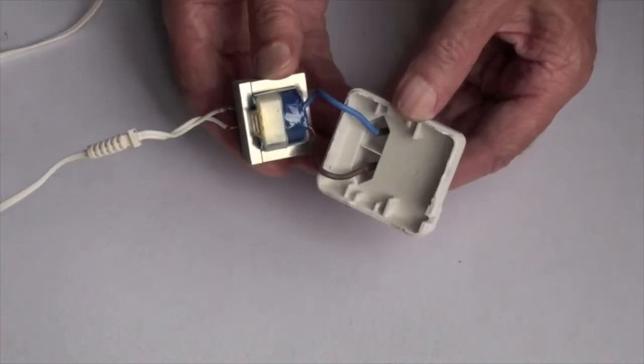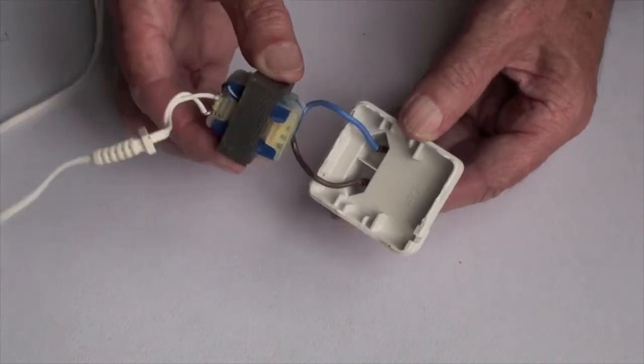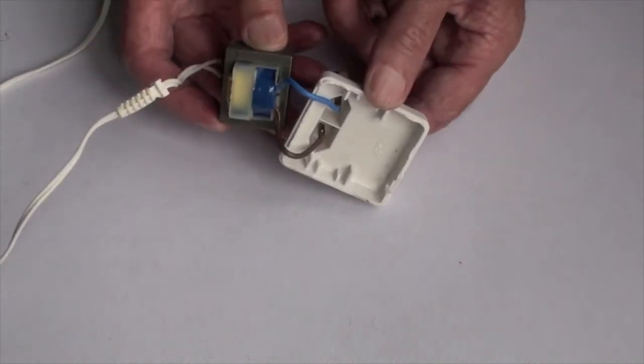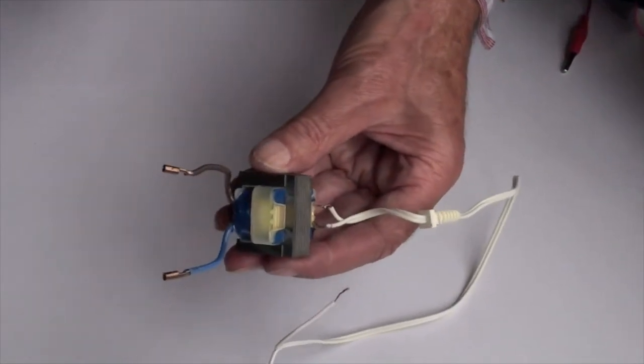Basically, a transformer consists of two coils, each wrapped around a magnetic soft iron core. The coils have no electrical connection. The connection is made via a magnetic field through this common iron core.